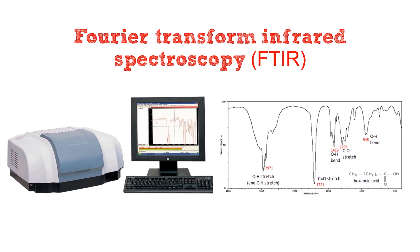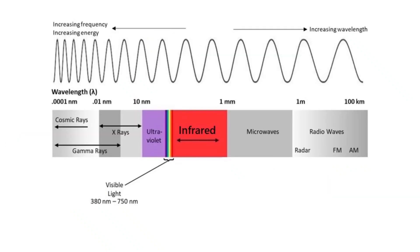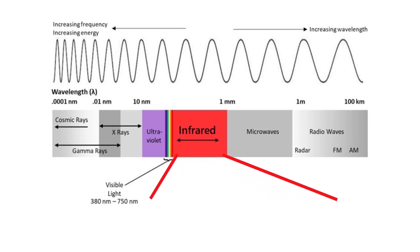Infrared spectroscopy. Infrared radiation is an electromagnetic radiation with wavelengths extended between 700 nm and 1 mm. It has wavelengths longer than visible light and shorter than microwaves. Infrared is used in many applications.